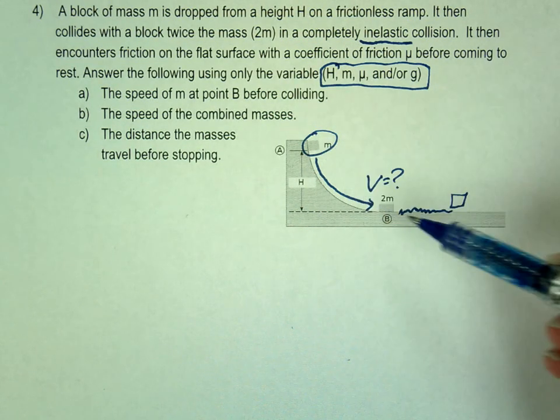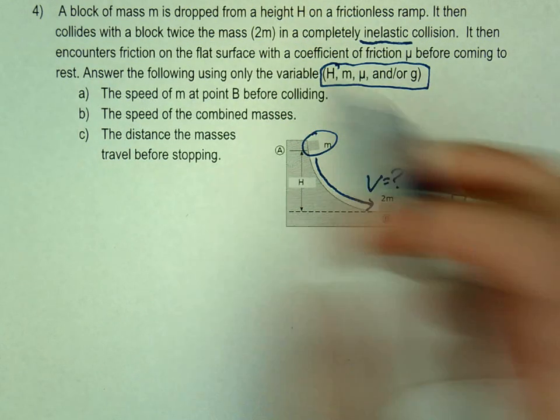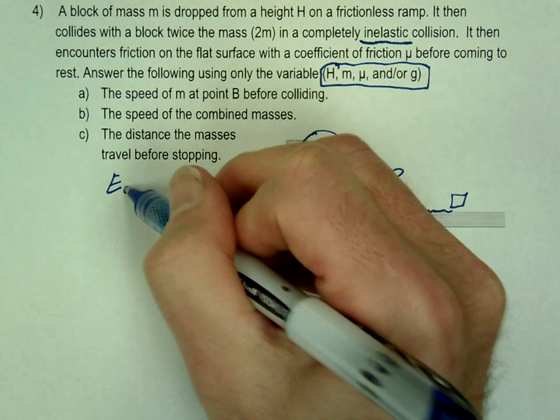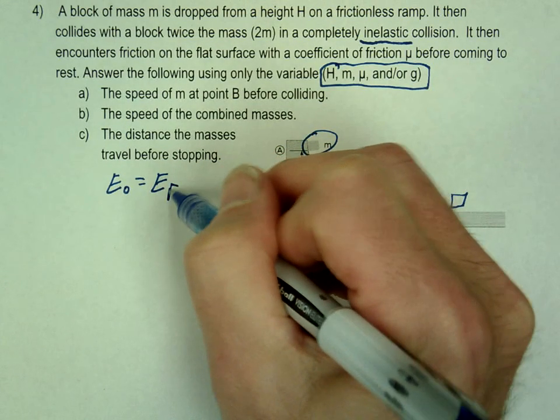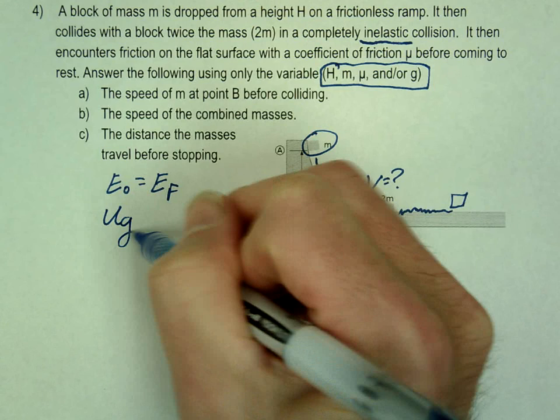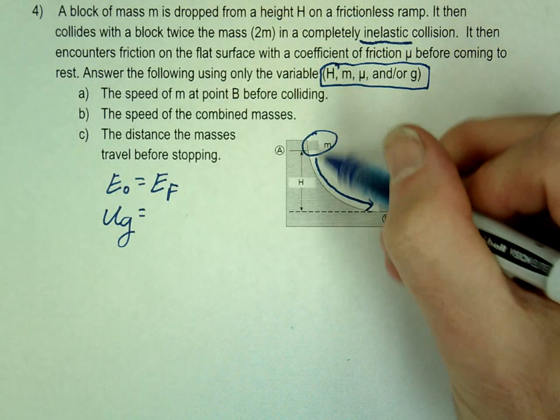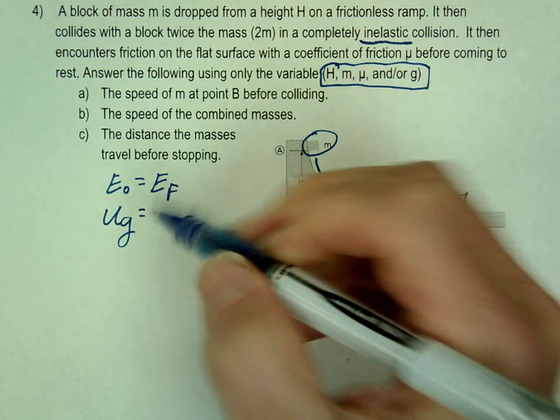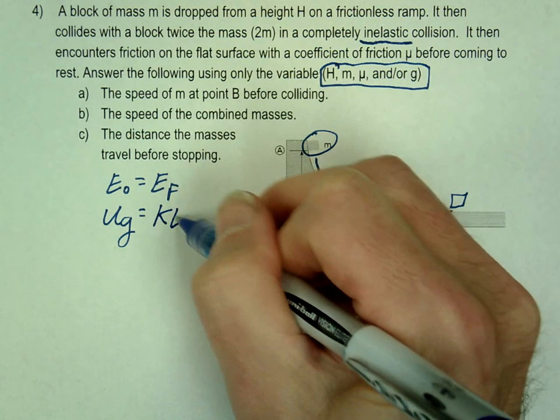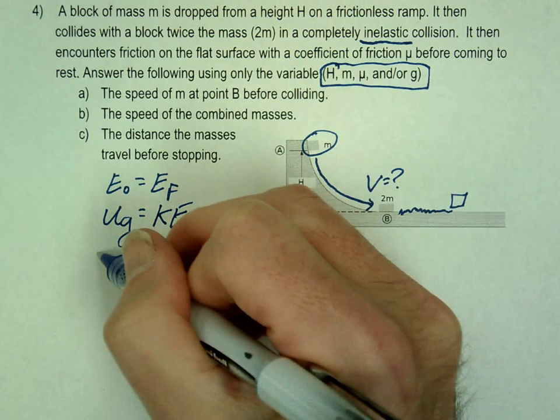So we're going to use conservation of energy, right? What kind of energy do we have up here at the top? Gravitational potential. So gravitational potential, UG. And then it slides all the way down to the bottom. What kind of energy at the bottom? Kinetic. All kinetic.